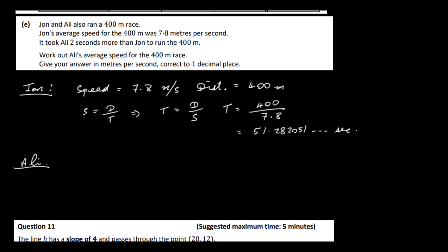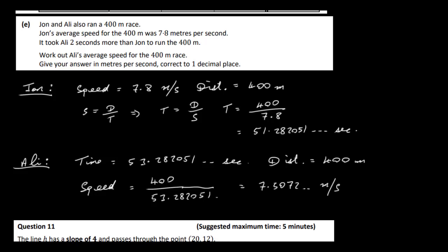So now we've got to look at Ali. Ali takes two seconds longer, two seconds more. So that means Ali's time is going to be 53.282051 and so on seconds. The distance is also, of course, 400 metres. So therefore, Ali's speed, average speed in this case, again, is distance over time. So it's 400 divided by 53.282051 and so on. And that gives us finally 7.5072 and this is metres per second. Now we need to do this to one decimal place. So that's going to be 7.5 metres per second. That's our answer there.